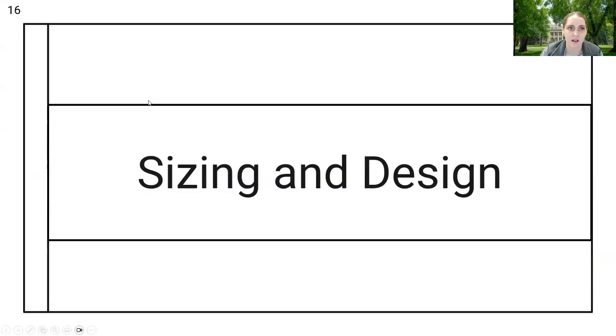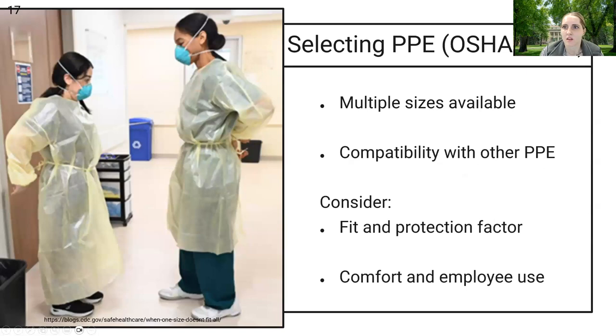That brings us to sizing and design. OSHA says that when you're selecting PPE for workers, you need to have multiple sizes available. The PPE should also be compatible with other PPE that the worker is wearing. The employer should consider the fit and protection factor of the PPE. These are kind of in harmony together. The fit can affect the protection that the PPE provides, and also comfort and employee use.